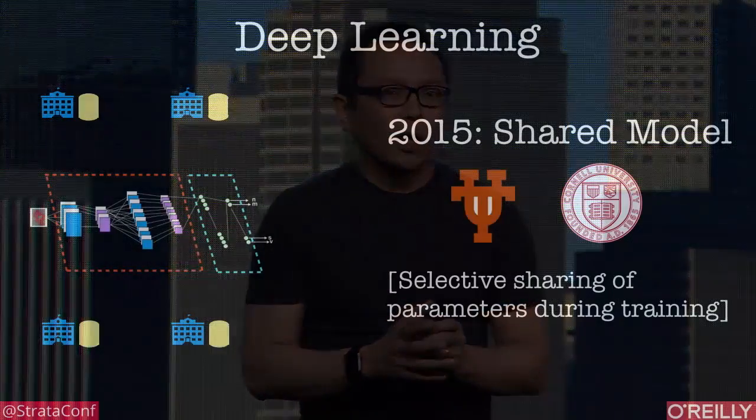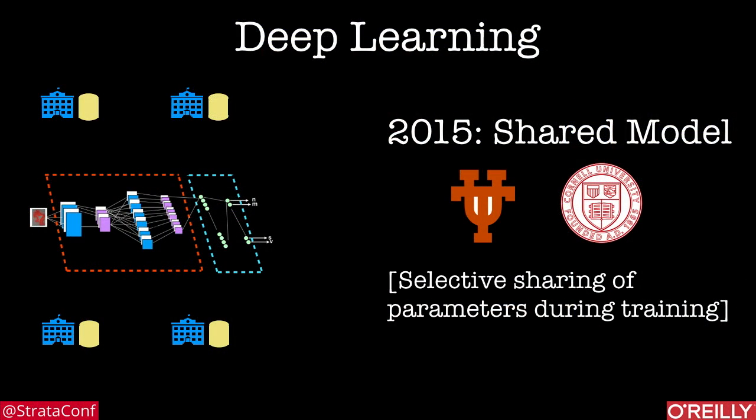What about machine learning? I'm going to focus on deep learning because it's a hot method, but a lot of what I'll describe applies to other machine learning methods. Because deep learning can be trained asynchronously, it lends itself to shared learning — imagine a scenario where a few companies want to learn a shared, accurate model, more accurate than they could learn using only their own data, but they don't want to share data across organizations. It turns out you can do that with deep learning because of the asynchronous training.